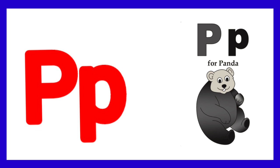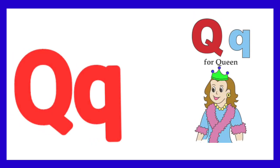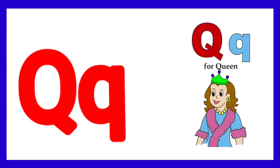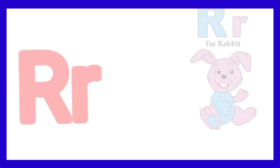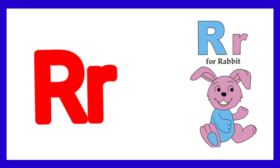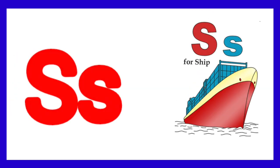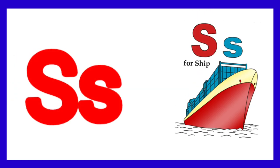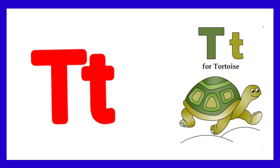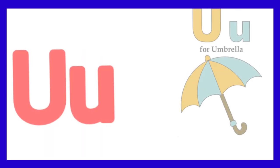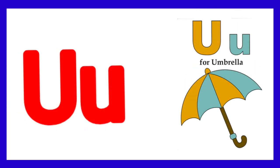P for Panda, Q for Queen, R for Rabbit, S for Shape, T for Tiger, U for Umbrella.